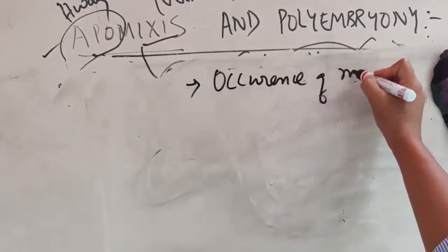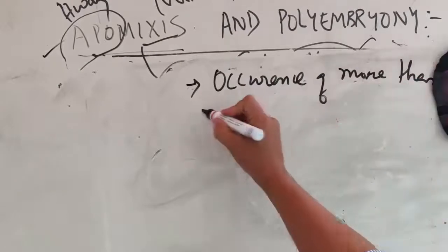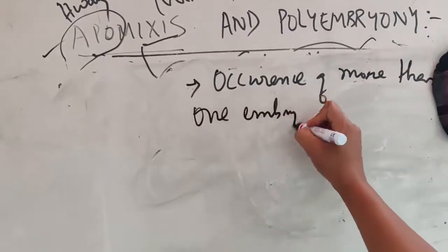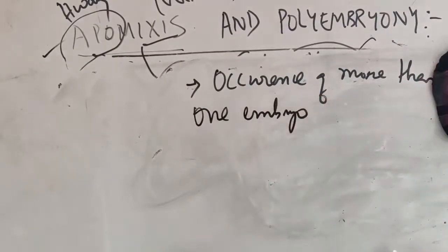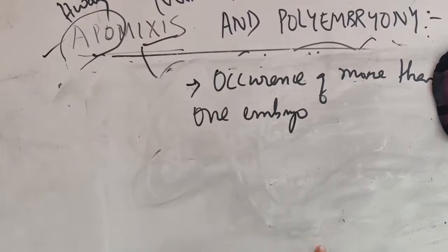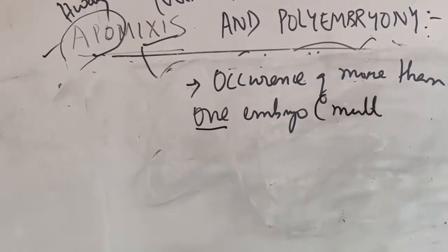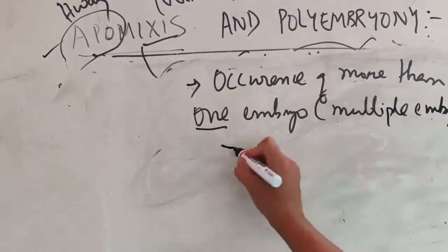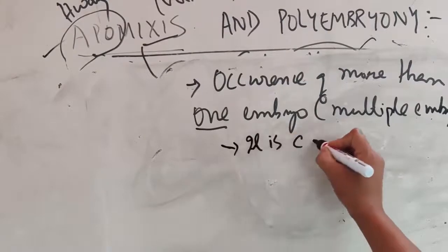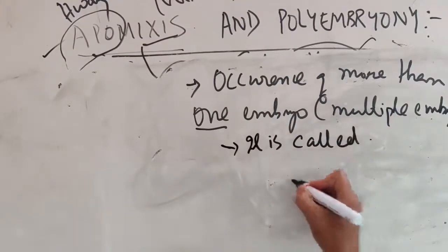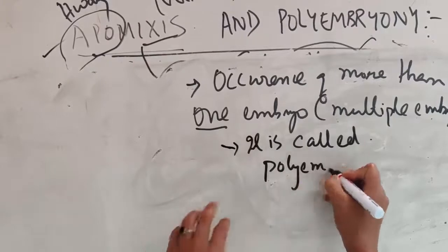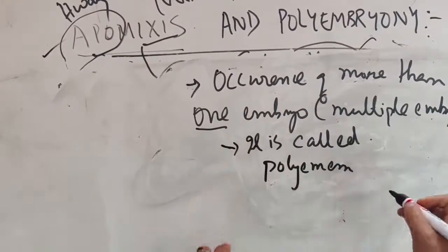Now, if embryos are formed — occurrence of more than one embryo in a single seed — then it is called polyembryony.